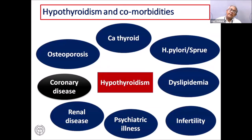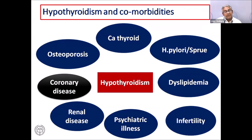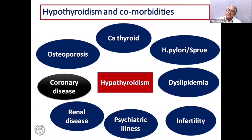Hypothyroidism management varies by comorbidities: significant osteoporosis warrants under-treatment; thyroid cancer (usually TSH-dependent) may require over-treatment; H. pylori, dyslipidemia, infertility, psychiatric illness, coronary disease, and renal disease all influence the treatment decision.